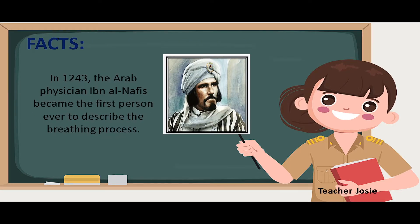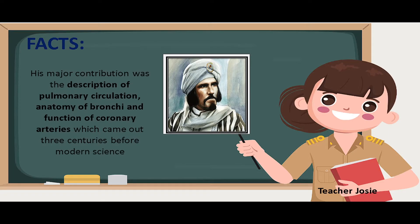In the history of medicine, in 1243, the Arab physician Ibn al-Nafis became the first person ever to describe the breathing system. His major contributions were the description of pulmonary circulation, anatomy of bronchi, and function of coronary arteries, which came three centuries before modern science.